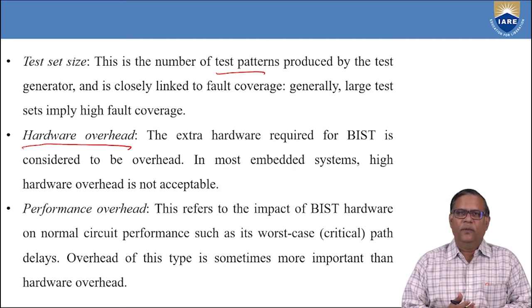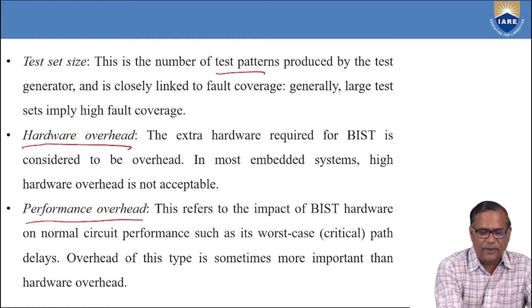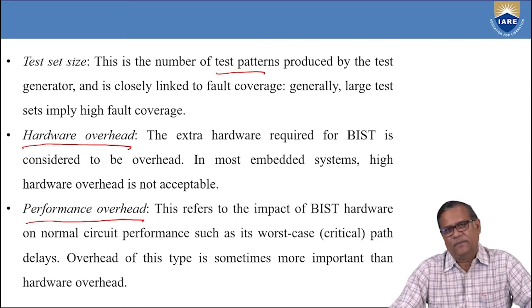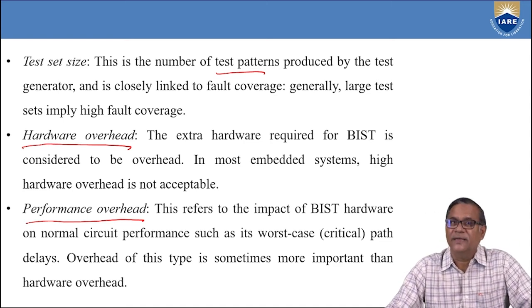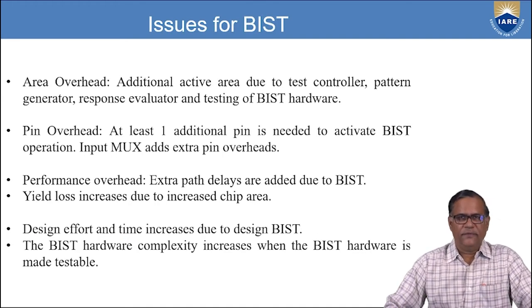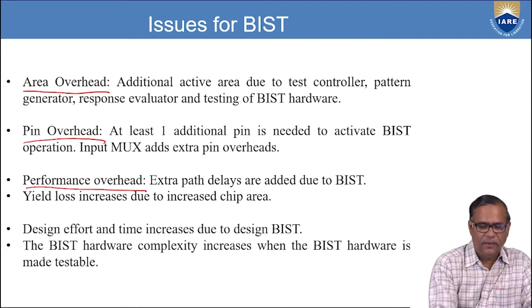The next parameter is performance overhead. This is the impact of BIST hardware on normal circuit performance, such as the worst case path delays. This type of overhead is sometimes more important than hardware overhead, because when you add extra circuitry like multiplexers, it naturally increases path delay, which affects performance. This is called performance overhead. The different issues of BIST are: area overhead, pin overhead, and performance overhead.